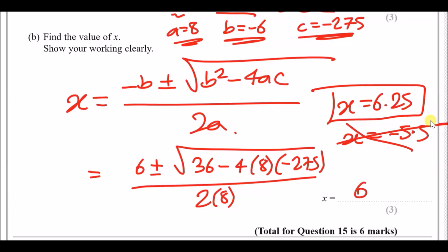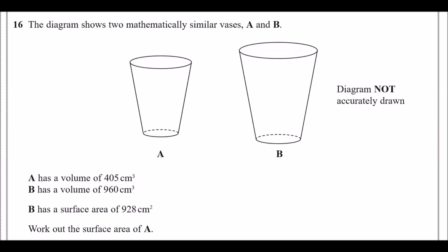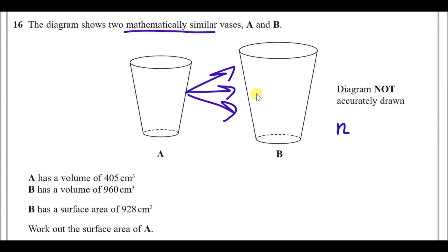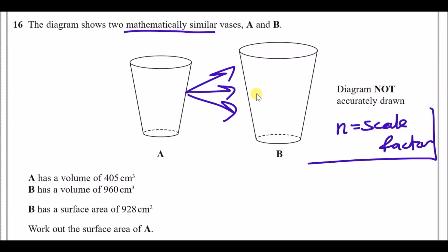Number 16: the diagram shows two mathematically similar vases A and B. Mathematically similar means the shapes are identical except one is proportionally bigger, so we need to find a common scale factor. Once determined, we can figure out lengths, volumes, and areas of the other shape.